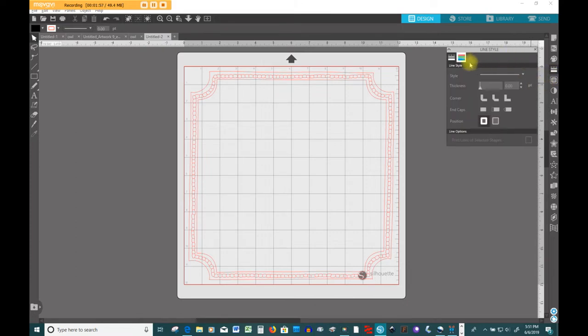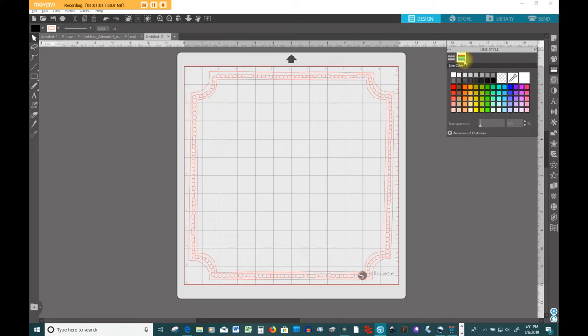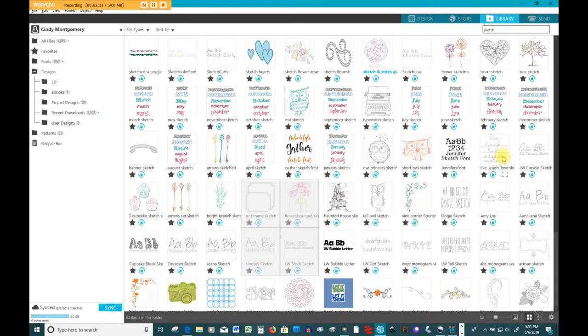Now, because I am what you see is what you get kind of person, I'm going to change my line color to black. It's not a necessity. It doesn't make any difference in the way the machine works, but I like to see what I'm going to get at the end of the project.